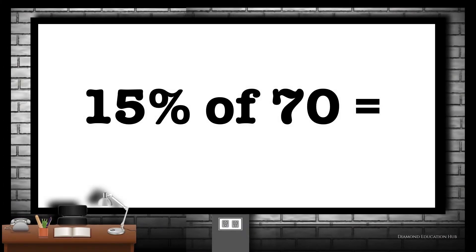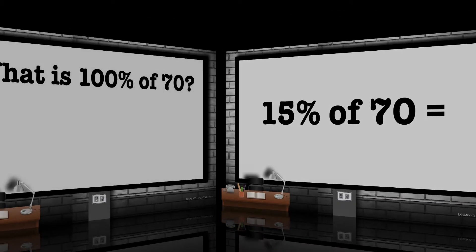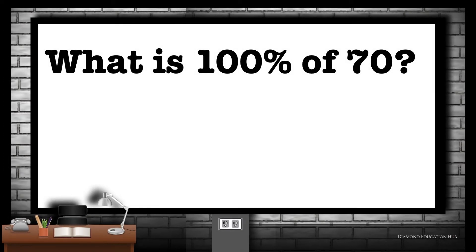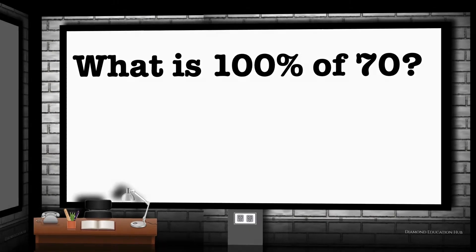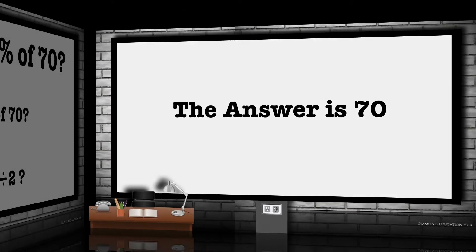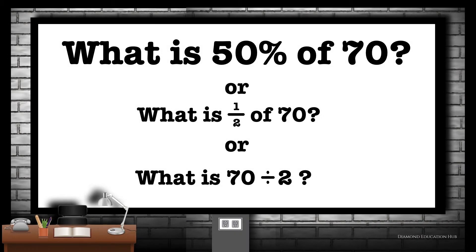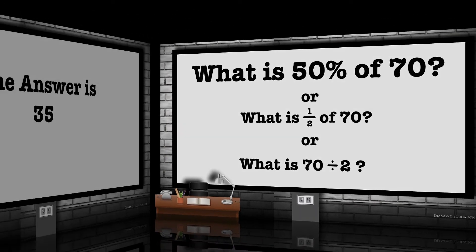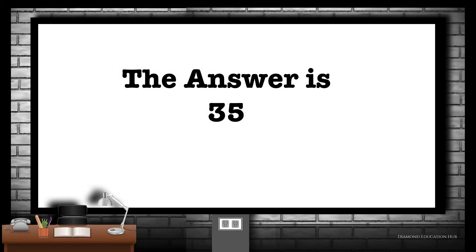What is 15% of 70? Let's go through this process for the final time. What is 100% of 70? 100% equates to the whole number, so the answer is 70. What is 50% of 70, or what is half of 70, or what is 70 divided by 2? The answer is 35.